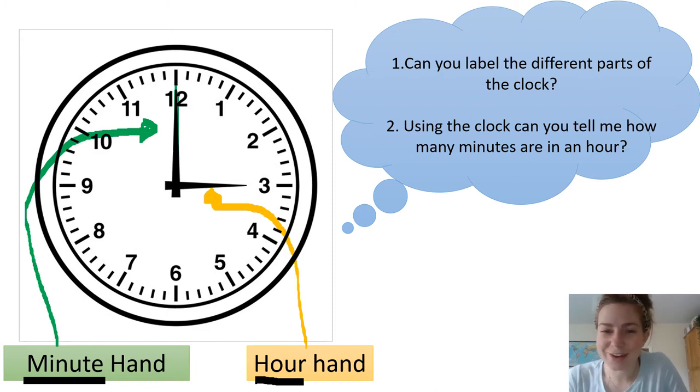Although, of course, we know when it comes to the time that an hour is longer than a minute, which leads me on to my second question for you. Using this clock, can you tell me how many minutes are in an hour? So pause me again and have a think of what the answer is to that question. Okay, fantastic, the answer is 60 minutes. There are 60 minutes in an hour. You might just have known that, or maybe you counted all these little lines.